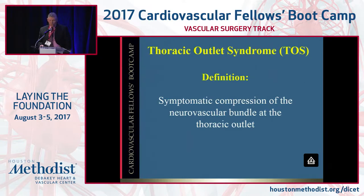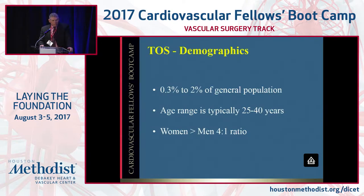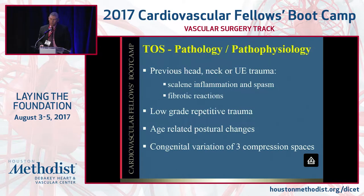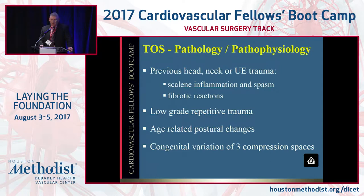Let's start with thoracic outlet syndrome, defined as compression of the neurovascular bundle at the thoracic outlet. It's very uncommon, typically affecting those aged 25 to 40, and women are 4 to 1 greater than men. Symptom distribution is primarily neurogenic. Secondary is venous and arterial, running far behind at 3% and 2% compared to 95% for the neurologic. The pathophysiology includes previous head trauma, low repetitive movements, age-related postural changes, and congenital variations of the three compression spaces.